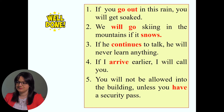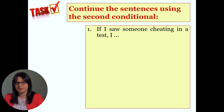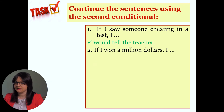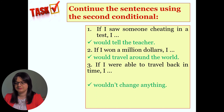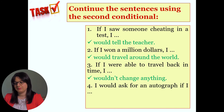Exercise number 3: continue the sentences using the second conditional. I will give you my variant. Number 1: 'If I saw someone cheating in the test, I would tell the teacher.' Number 2: 'If I won a million dollars, I would travel around the world.' Number 3: 'If I were able to travel back in time, I wouldn't change anything.' Number 4: 'I would ask for an autograph if I met my favorite film star.'